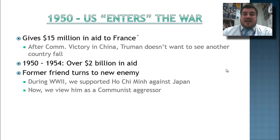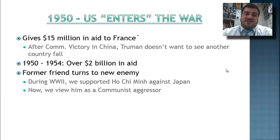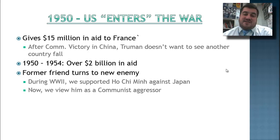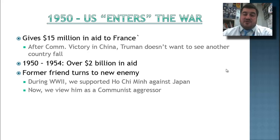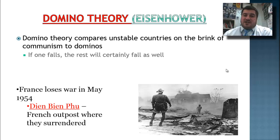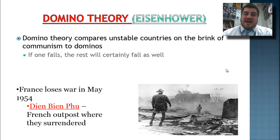In 1950, Truman enters the war because China had just been lost to communism. We don't want to see another Southeast Asian country fall, so we give $15 million in aid to France. From 1950, Eisenhower in 1952 also continues the aid going to France, and we give over $2 billion in aid. Our former friend Ho Chi Minh — whom we supported against Japan in World War II — turns into our new enemy. Eisenhower frames this all through the domino theory: we cannot let one unstable country fall to communism, because if the first one falls, the rest will surely fall as well.